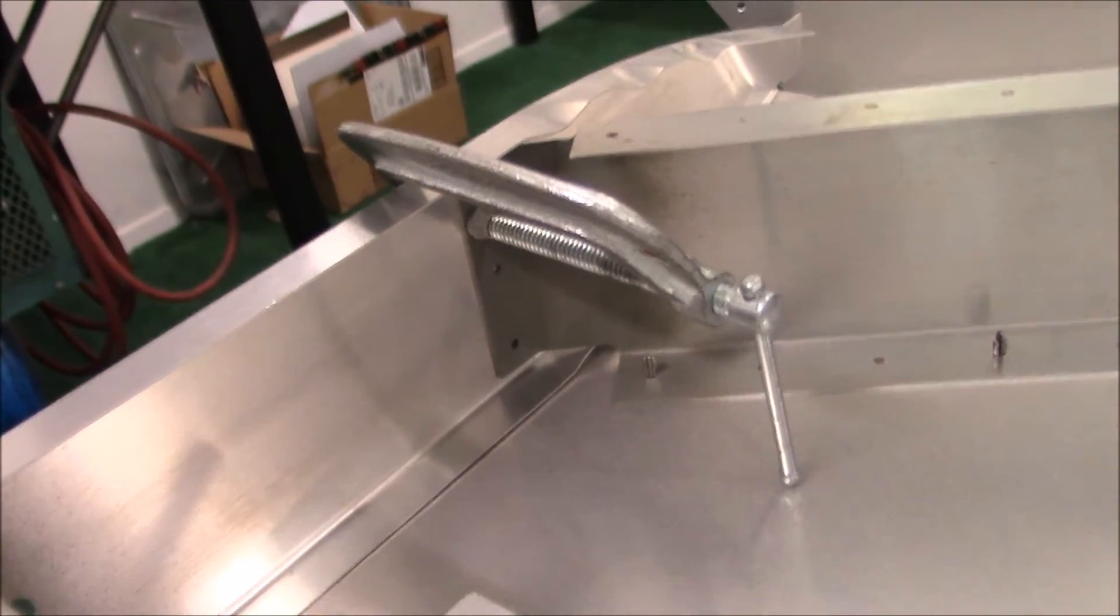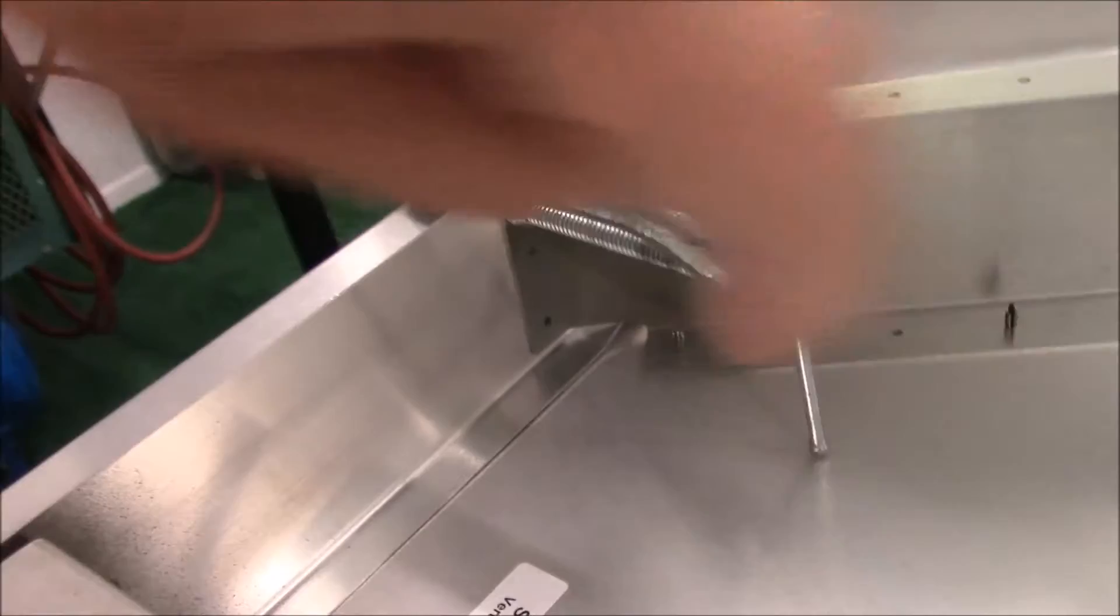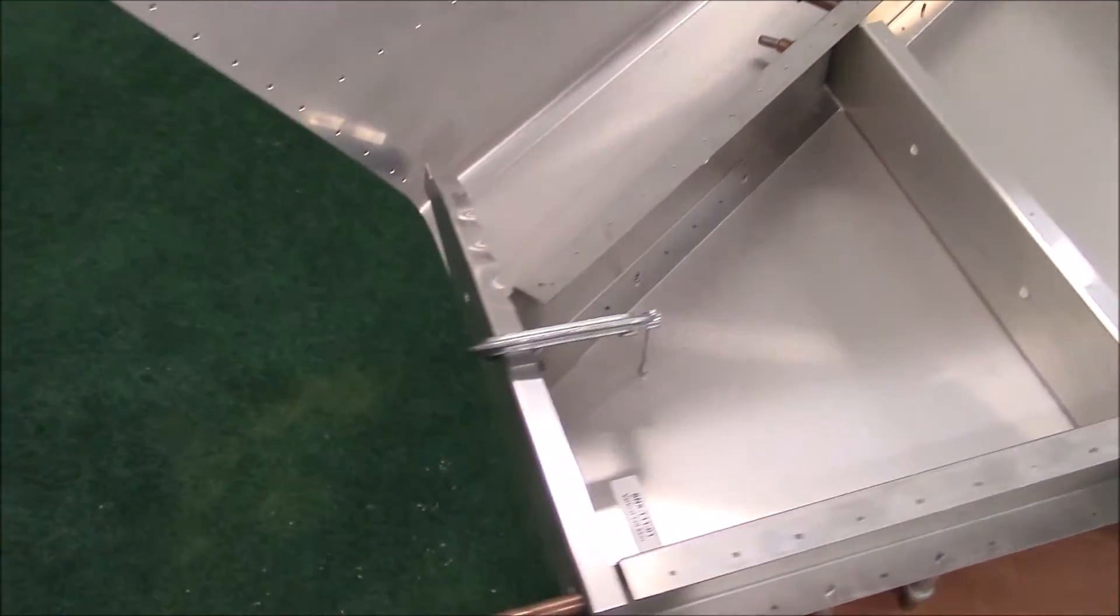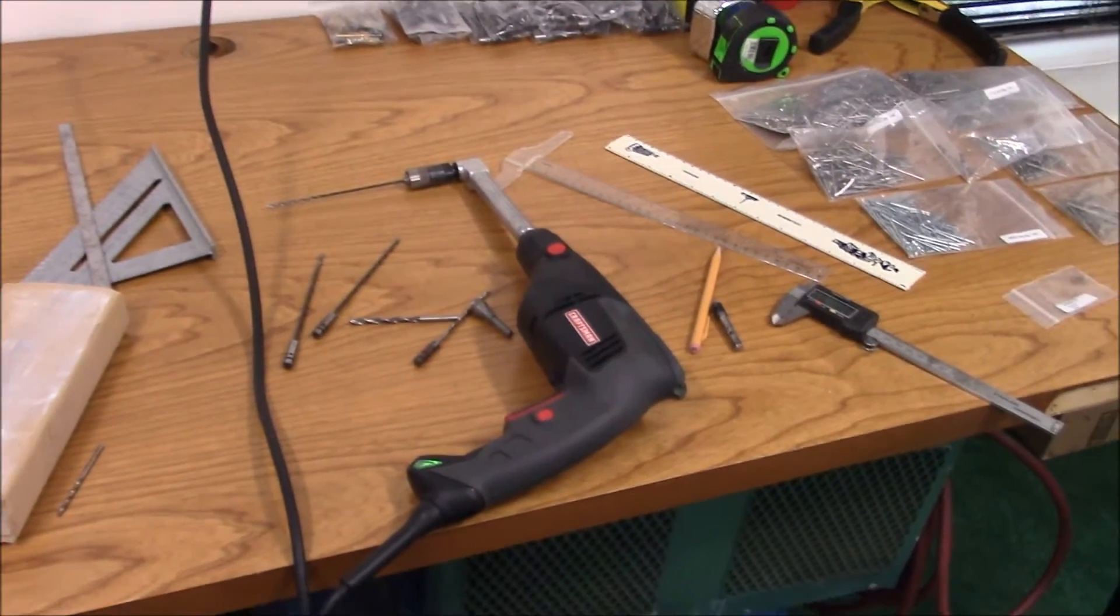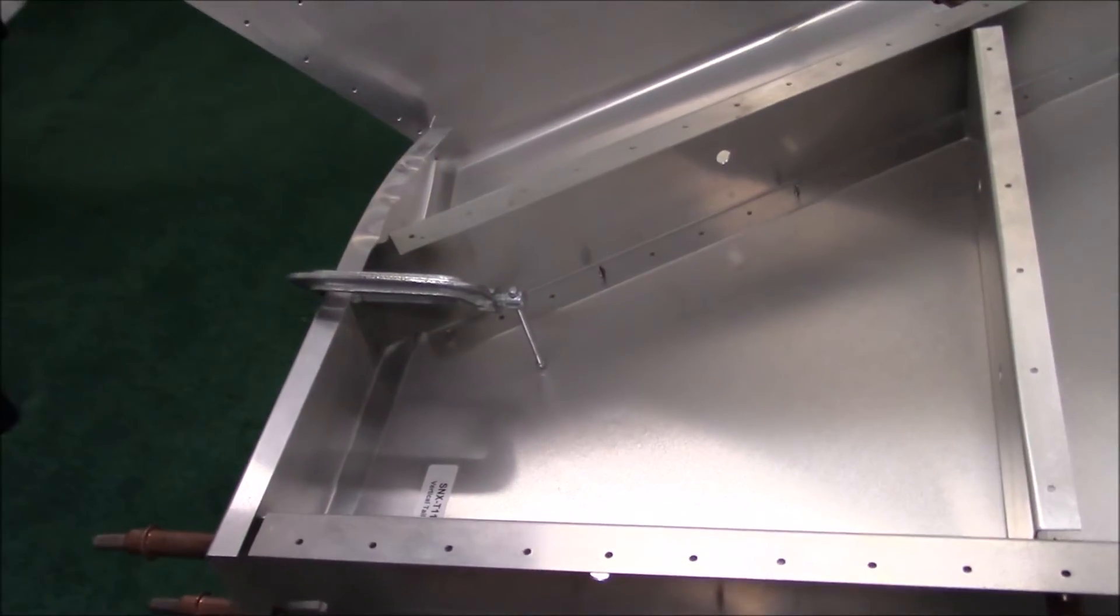I just found out that the pilot holes are on the inside here, so I need to drill from this side out to make sure I get a proper hole drilled. And so I'm using my 90 degree drill angle so I can put it in there and drill those three holes.